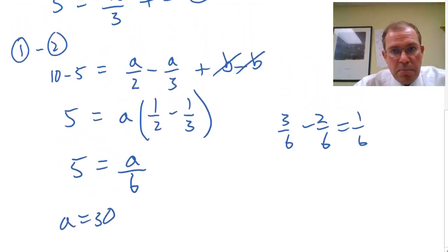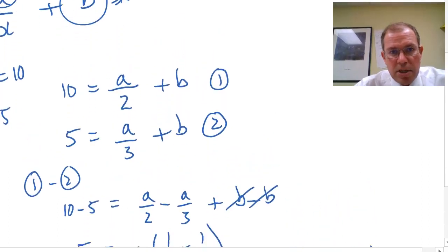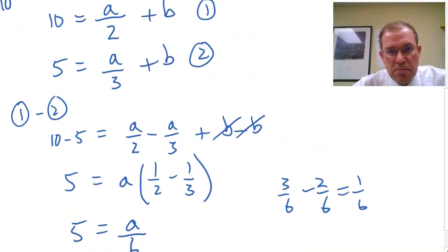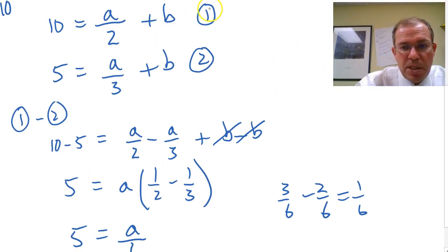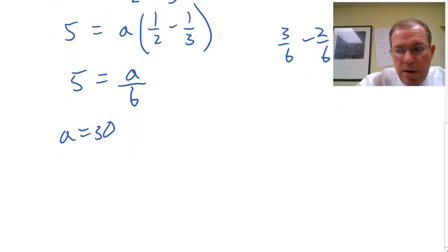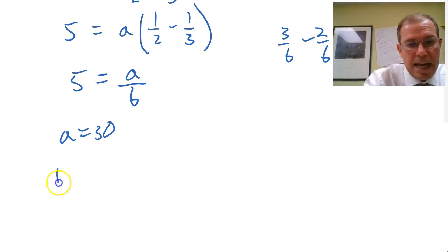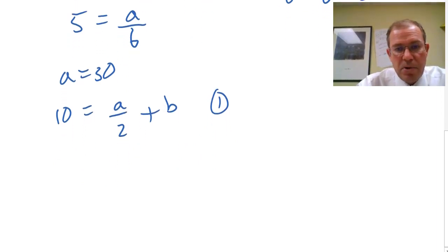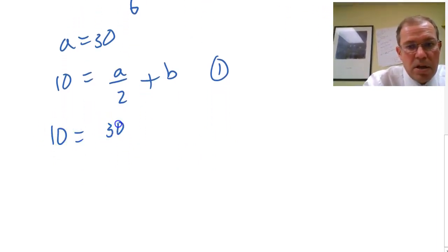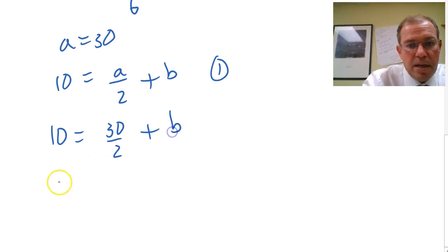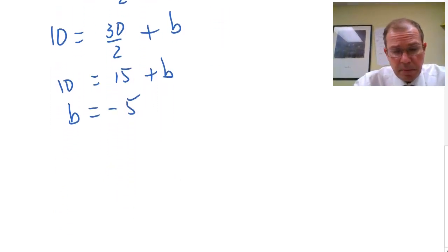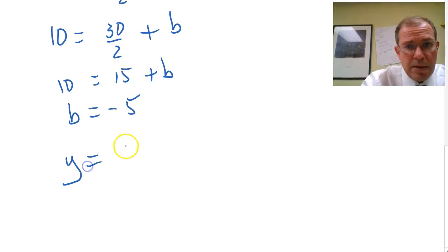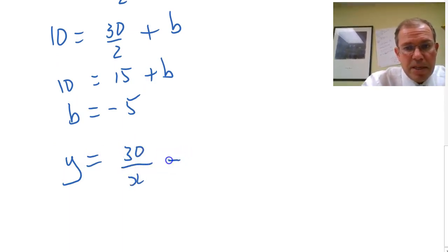So to find b, we need to pop it back into equation 1. So let's just copy down equation 1. It was 10 equals a over 2 plus b. Let's put 30 in there. So 10 equals 30 over 2 plus b, so 10 is 15 plus b, and subtracting 15 from both sides gives me b is minus 5. So I've got my final equation, which is y equals 30 over x, and then b is minus 5.